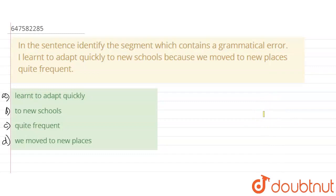Question in my question, what is the sentence? This is the sentence. I learn new things quickly because we are often, quickly, and quite frequently. We are going to change places.